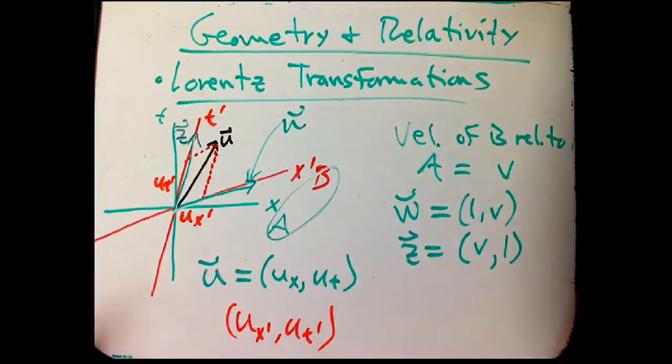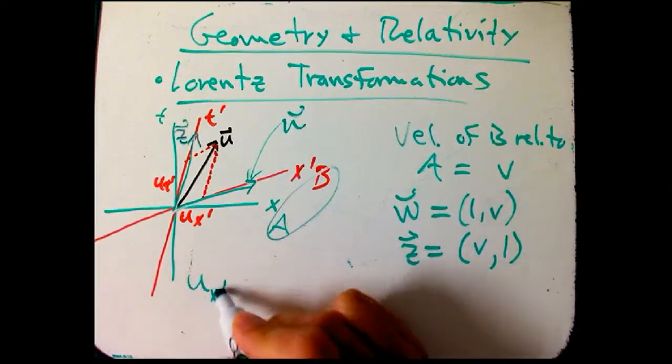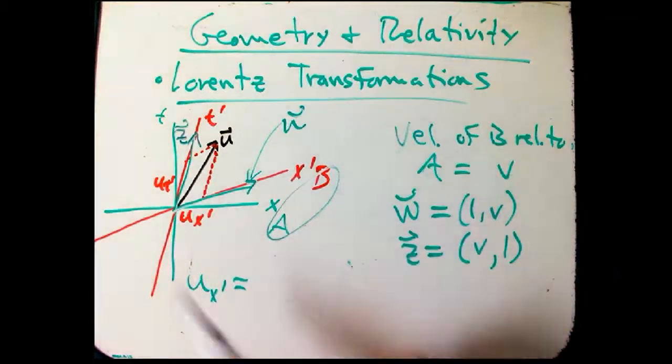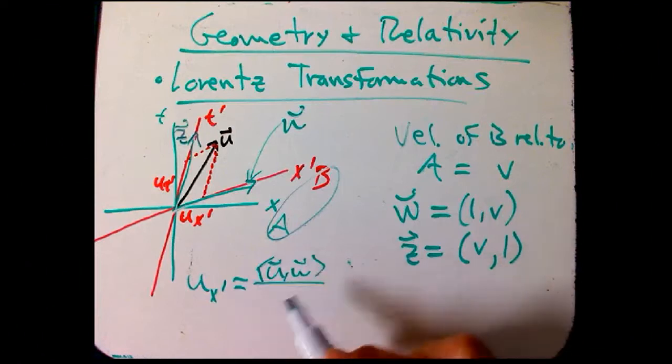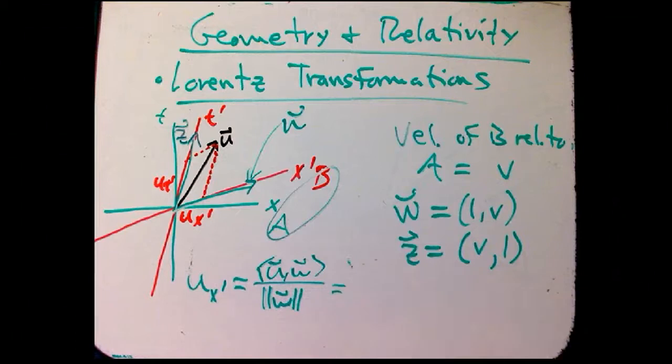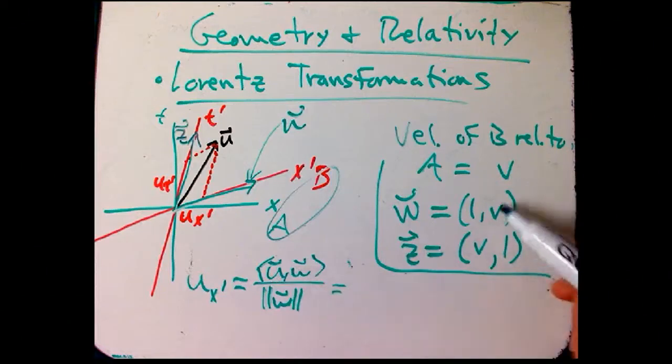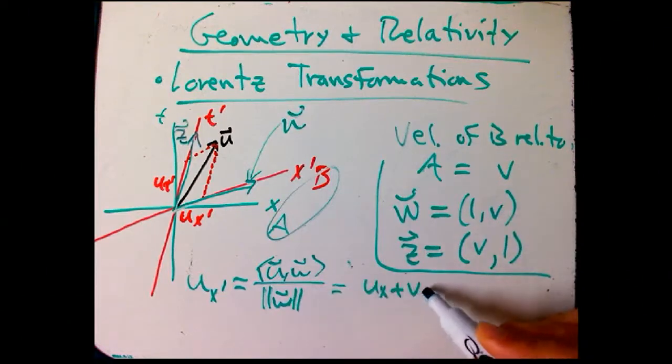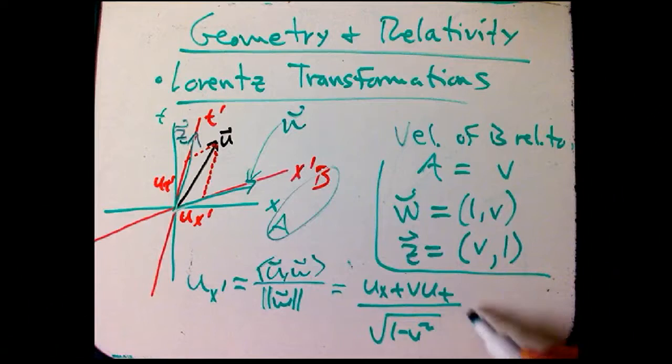So now we're ready to project. So U sub X prime, B's version of this vector, is going to be, now I'm going to use the angle bracket notation to emphasize that we're in the Minkowski case. It's exactly the same formula, though. Remember, projections work exactly the same. That's the nice thing about projections. And so that's going to be the inner product of UX UT with W is going to be UX plus V UT divided by the magnitude of W. The magnitude of that is the square root of 1 minus V squared. Hey, that's a familiar thing. That's gamma. So it's gamma times UX plus V UT.